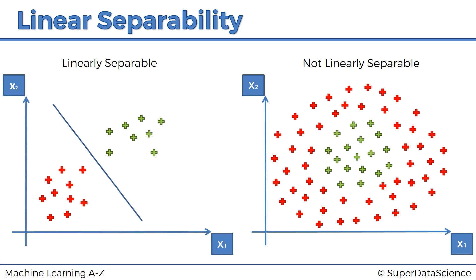The section is structured as follows: first, we're going to explore a method called going to a higher dimensional space, where we'll learn how to take a dataset and add an extra dimension to make the data linearly separable. Then we will discuss the kernel trick, which allows us to do this in a more computationally efficient way without dealing with higher dimensions. Finally, we will talk about the different types of kernels that exist. Quite an interesting section ahead!